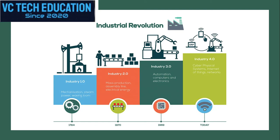In stage 3, electronics based logic controller programs are used to control different mechanisms and machines in the industry and manufacturing is controlled. At this stage, electronics and computers took initiative using programmable logic controllers for Industrial Revolution, achieving further automation and manufacturing.